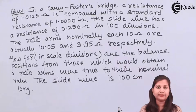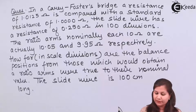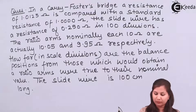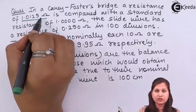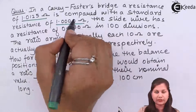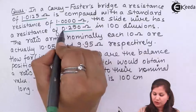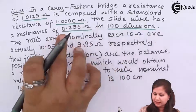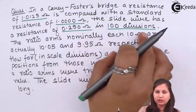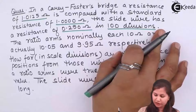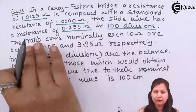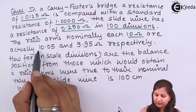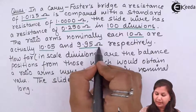The question is that in our Cary-Foster slide wire bridge, a resistance of 1.0125 ohm is compared with the standard resistance of 1 ohm. The slide wire has a resistance of 0.250 ohms in 100 divisions. The ratio arms nominally have a value of 10 ohm, but actually the values are 10.05 and 9.95 ohms.